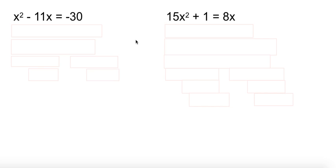Now we have a couple here where they're not equal to 0. But that's okay. We can deal with that. We can get 0 over here. All we have to do is add the 30 to get it to the other side.